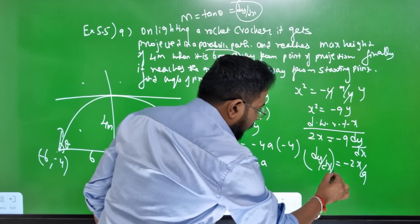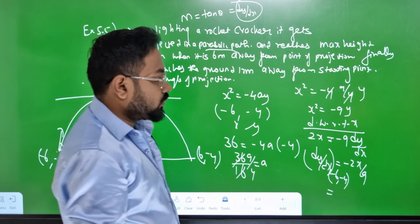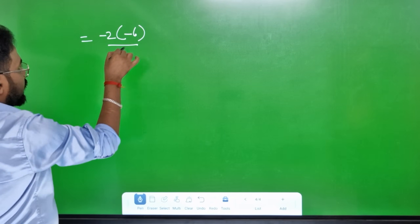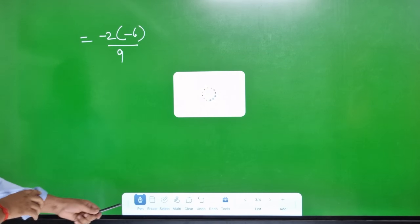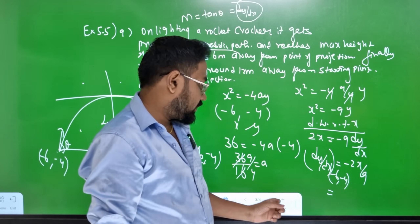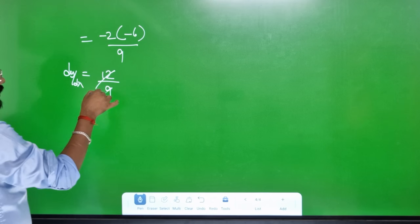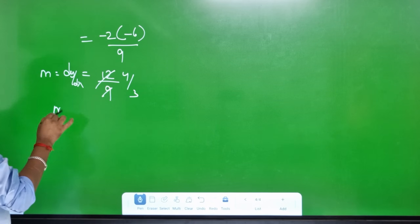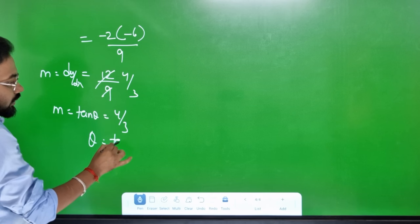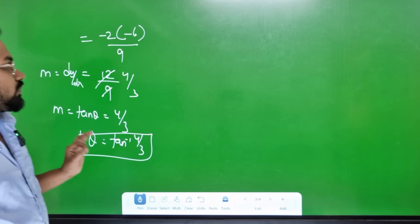dy/dx is the slope. dy/dx is equal to minus 2x divided by 9. Now we will find the point — the point x is minus 6, minus 4. Substitute x: dy/dx = minus 2 times minus 6 divided by 9, which gives 12 by 9, which simplifies to 4 by 3. Then m = dy/dx = tan theta, so tan theta = 4 by 3. Therefore theta = tan inverse of (4/3). Very simple.